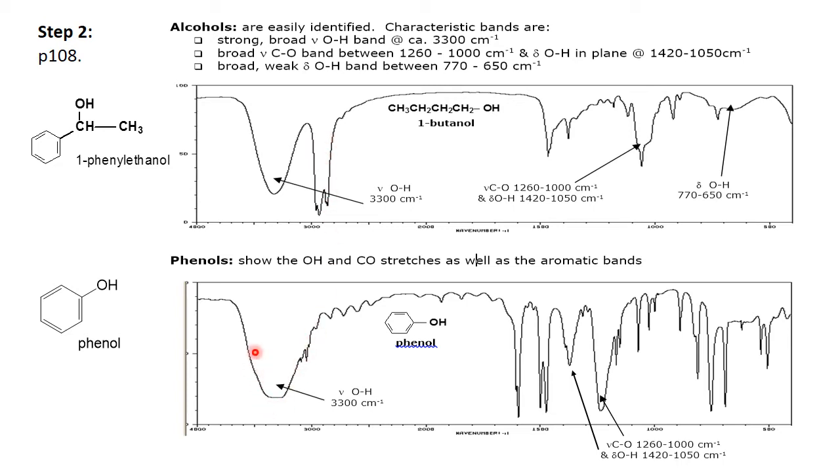Even in the phenol the hydroxyl stretch is approaching the baseline before any of these 3000 stretches would occur. Also there is a broad CO stretch between 1260 and 1000 wave numbers, and also an OH bend around 1420 to 1050. These have limited usefulness because of their variability in their positions. The aspect that makes them useful is the fact that they're broad, broader than a normal carbon to carbon stretch.